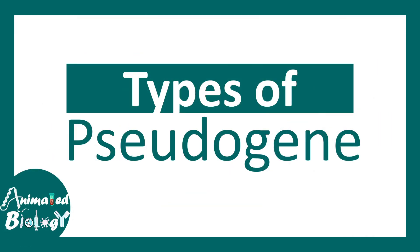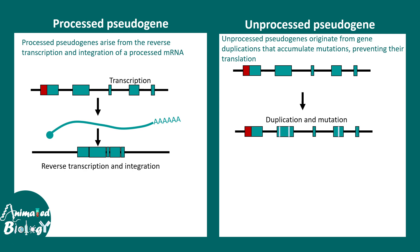Let's talk about the types of pseudogenes. There are two types: processed pseudogenes and unprocessed pseudogenes. Processed pseudogenes are a consequence of retrotransposition, where the RNA of a particular gene is transcribed and later the corresponding cDNA is incorporated into a new genomic location, creating the pseudogene — but it lacks the promoter elements because the mRNA won't have the promoter. Unprocessed pseudogenes may have promoters, but they occur as a result of duplication and accumulate mutations in their reading frame, so they may not produce a functional protein, or may produce a protein with a different function.